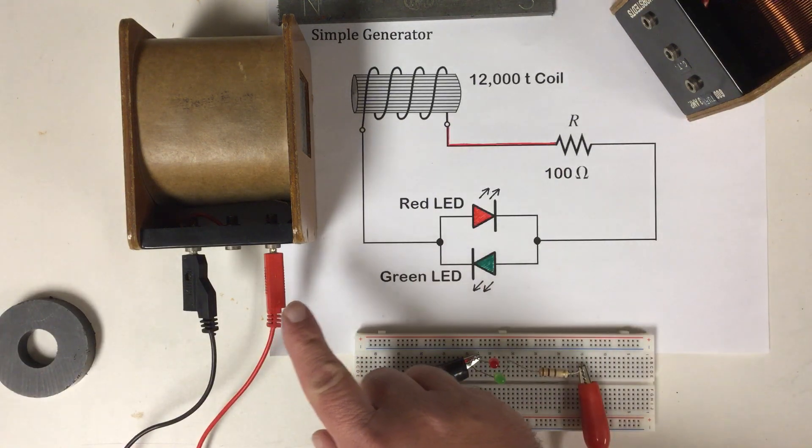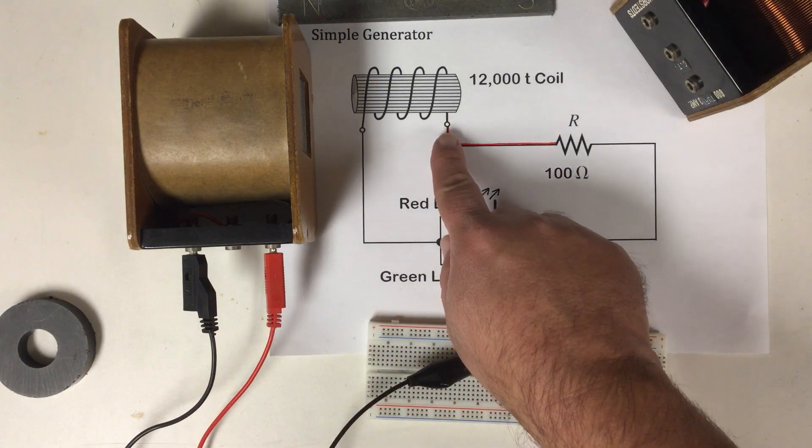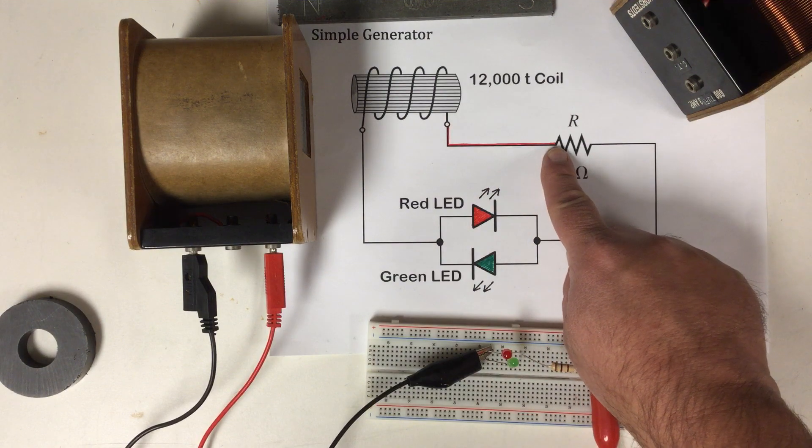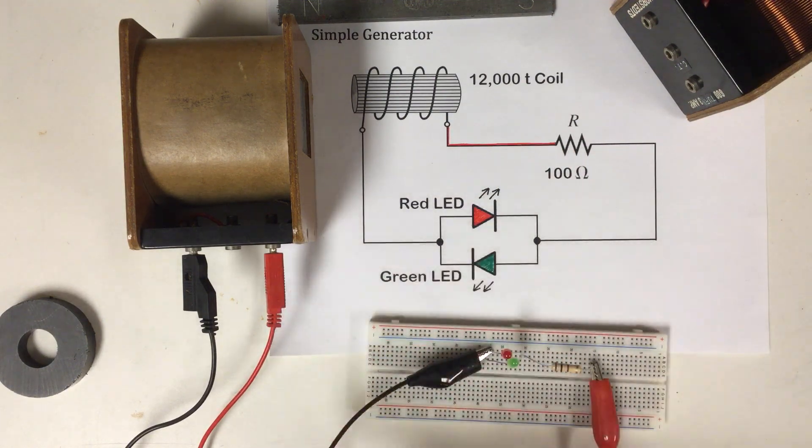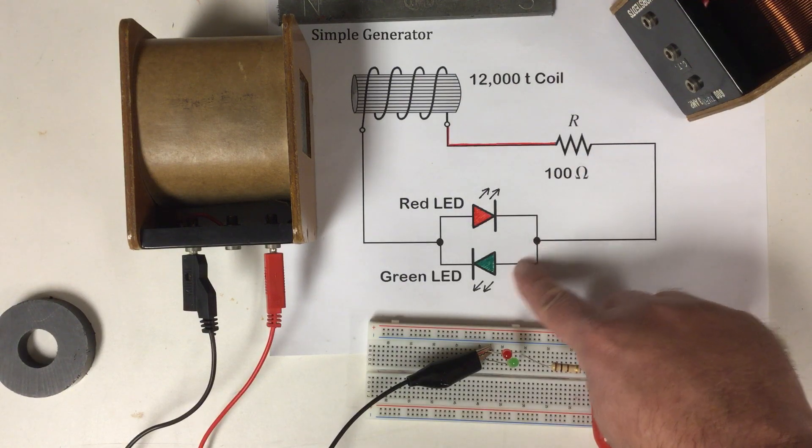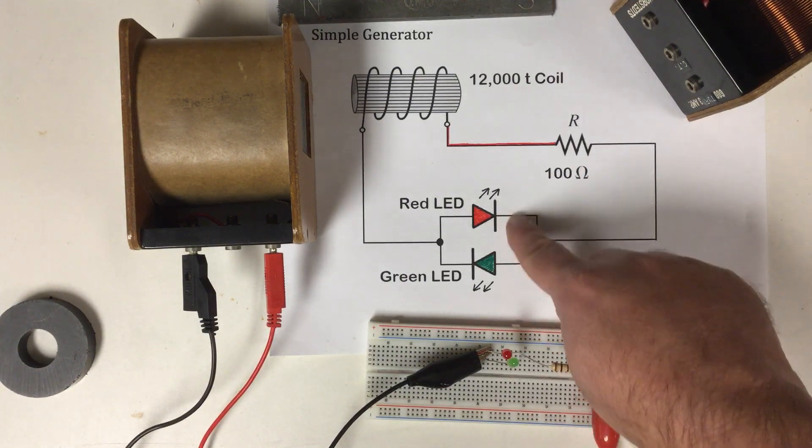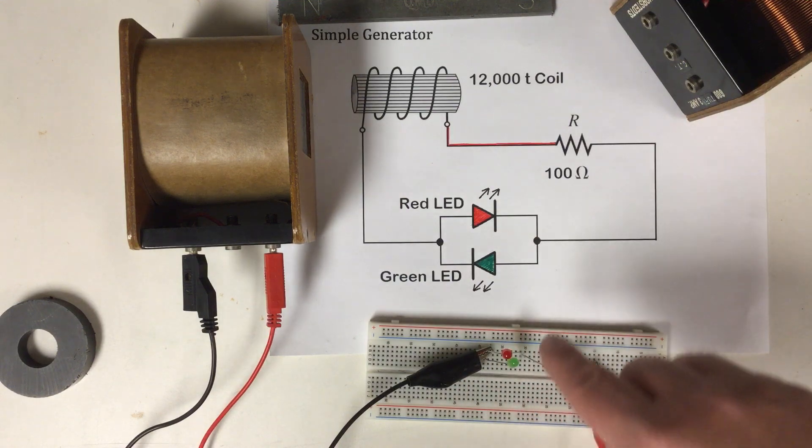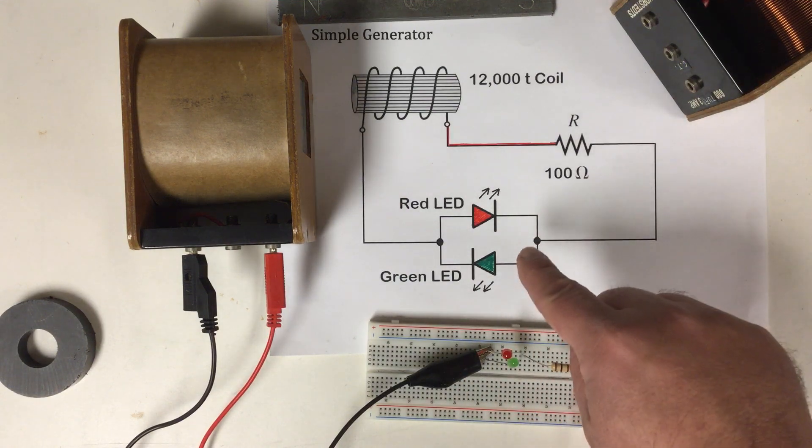I come out of my generator and my red wire makes its way to my 100 ohm resistor. I then come out of my 100 ohm resistor and I go into a pair of diodes, a red diode and a green diode, LEDs, light emitting diodes.